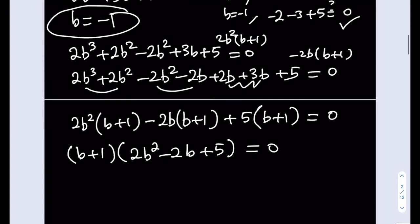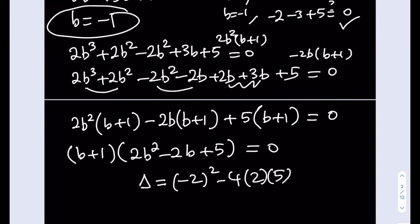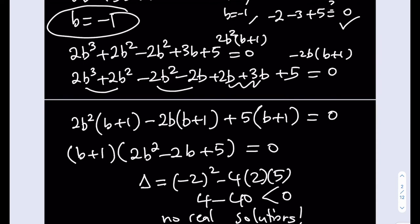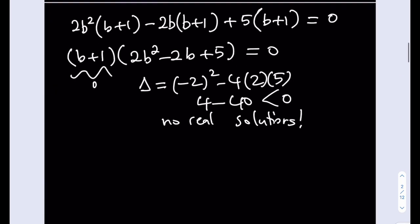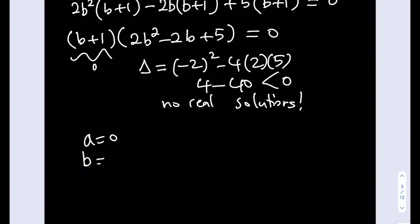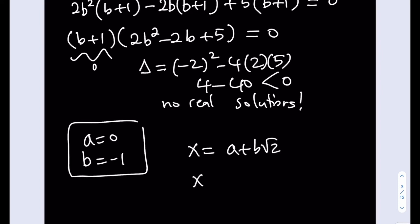Now let's check the quadratic factor 2b² − 2b + 5 for real solutions using the discriminant: b² − 4ac = 4 − 40 = −36, which is less than 0. No real solutions from the quadratic, meaning b = −1 is the only real solution. So our conclusion is a = 0 and b = −1, and since x = a + b√2, we get x = −√2. We found an irrational solution without using the cubic formula.